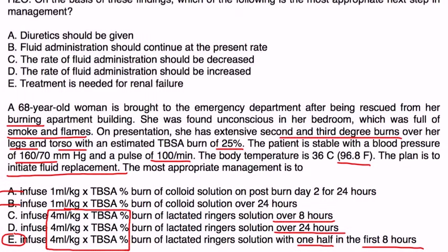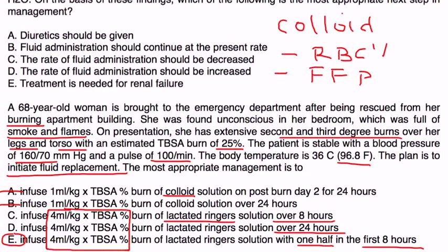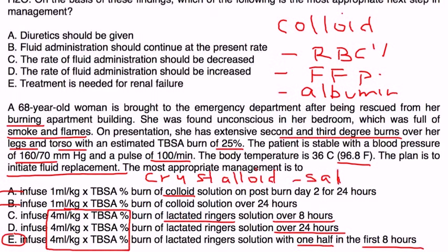Before closing, it's worth pointing out the difference between colloid and crystalloid solutions. Colloid solutions include red blood cells, fresh frozen plasma, and albumin solutions. Crystalloid solutions include normal saline and lactated Ringer's solution, which are commonly used in burn management.